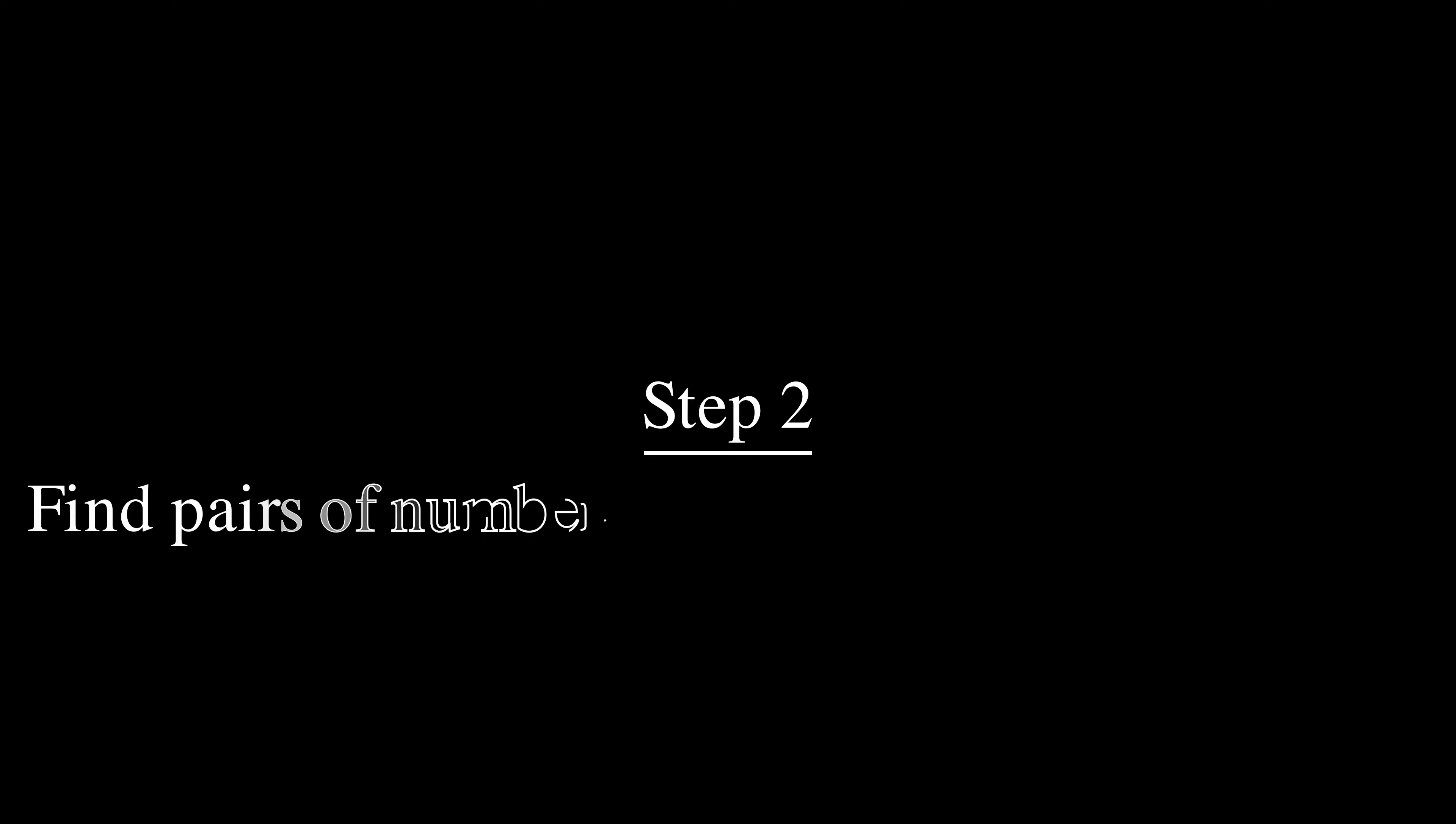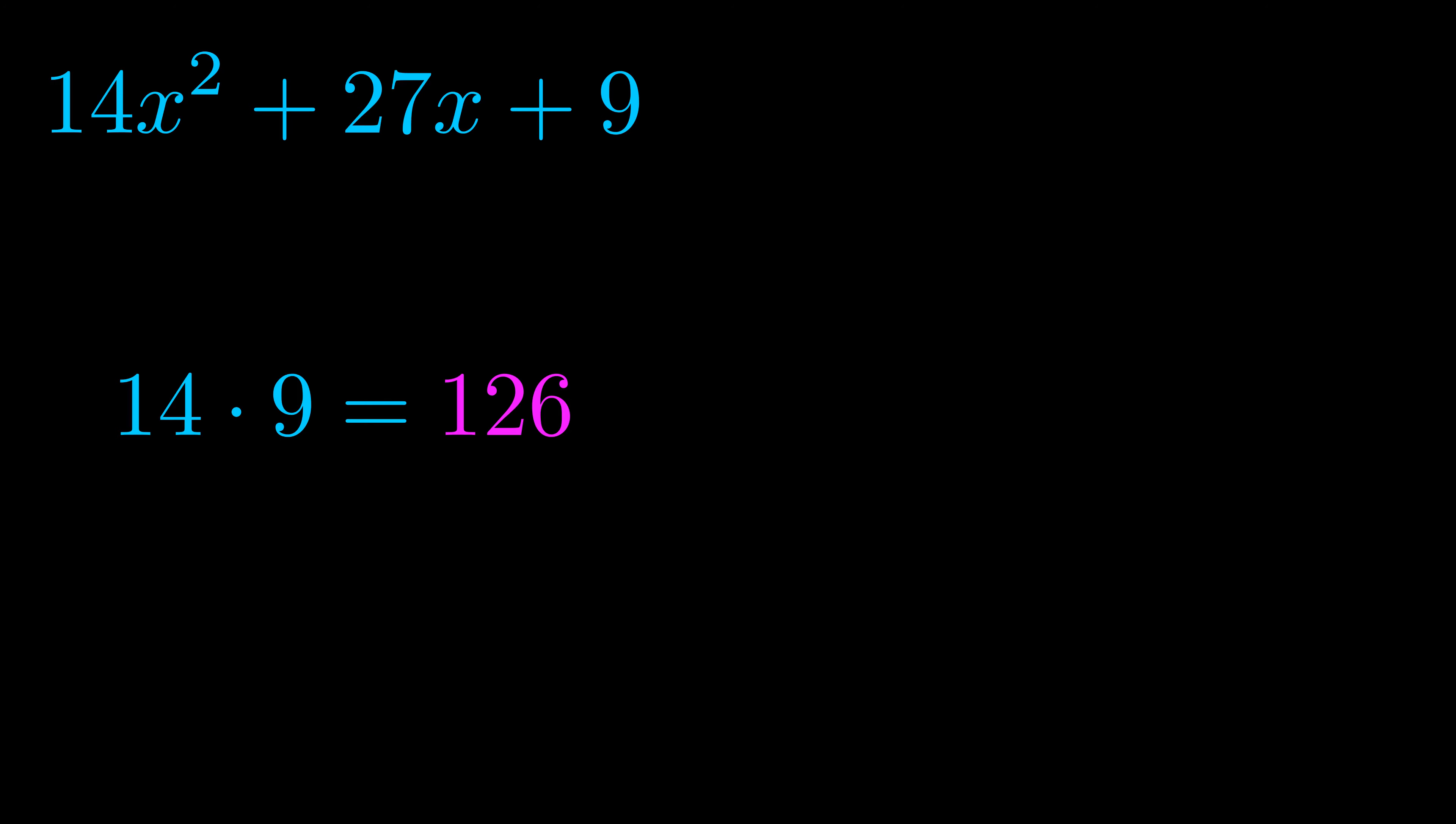Step two is to try to find all of the pairs which multiply to this number. Now turns out you don't really need to find all of them, but go ahead and write down as many numbers as you can that multiply to the magenta value for now. Pause the video and resume when you're ready to continue.